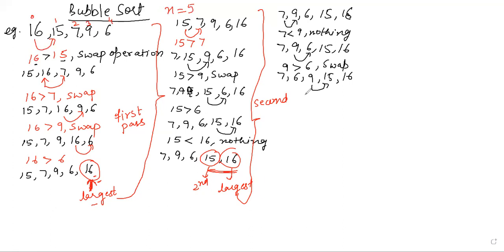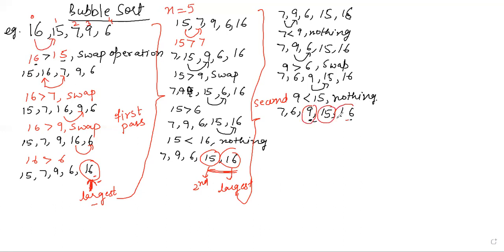Now we compare 9 and 15 — 9 is smaller than 15, so nothing happens. We do nothing when the previous element is smaller than the next element. Similarly, 9 is smaller than 16, so nothing happens. By the end of this pass, three elements — the largest, second largest, and third largest — are at their required positions. That is the end of my third pass.